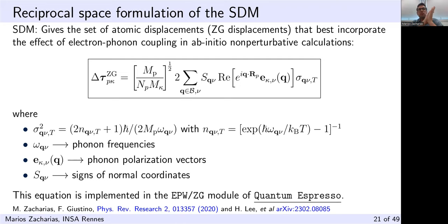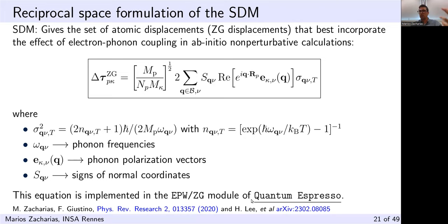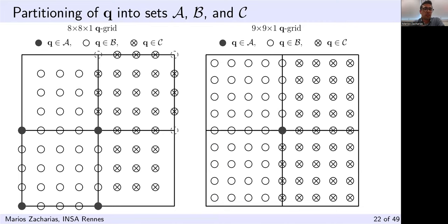In 2020 we developed a reciprocal space formulation, generating special displacements using quantities from density functional perturbation theory. The expression for special displacements includes phonon wave vectors, a reference mass (proton mass), atomic masses m_k, and N_p the number of unit cells in the supercell. Signs are allocated by the EPWZG module by minimizing an error function. Sigma is the mean square displacement depending on the Bose-Einstein occupation factor divided by the phonon frequency. This expression is implemented in the ZG module of Quantum ESPRESSO.